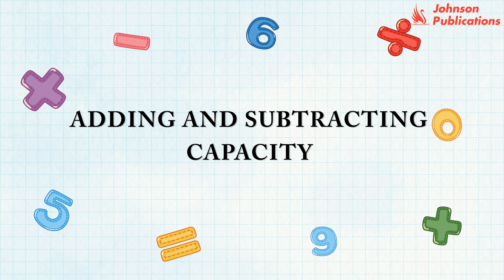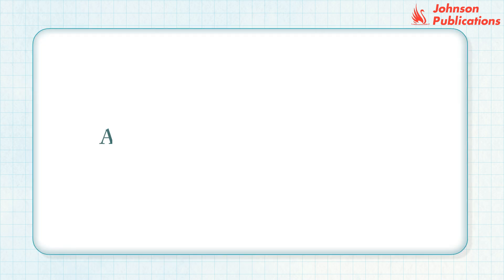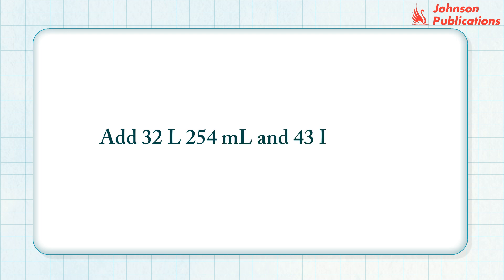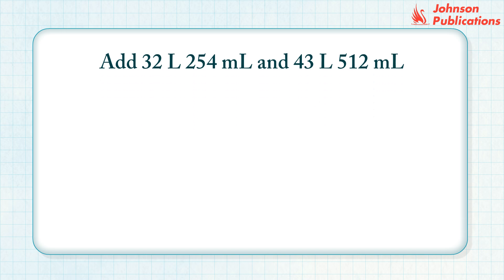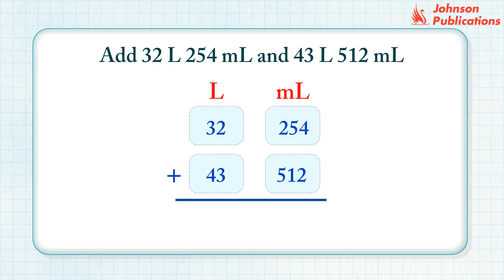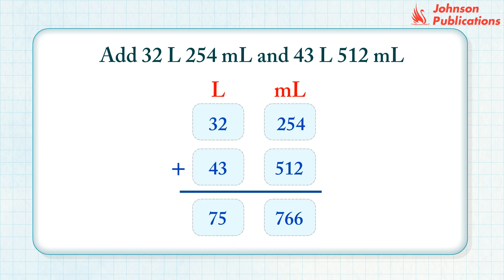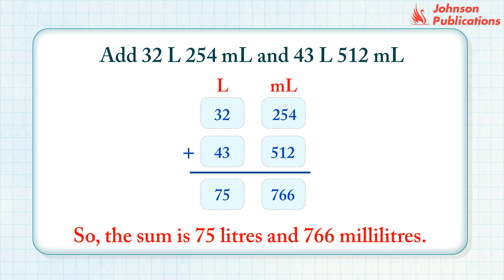Adding and subtracting capacity. Add 32 liters 254 milliliters and 43 liters 512 milliliters. Step 1: Arrange the capacities into their respective columns of units. Step 2: Add the milliliters column. Step 3: Add the liters column. So, the sum is 75 liters and 766 milliliters.